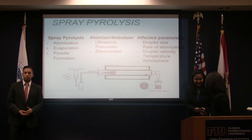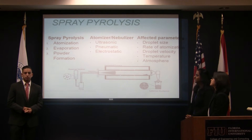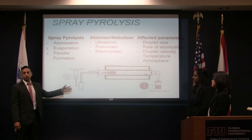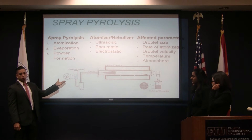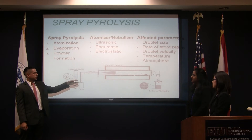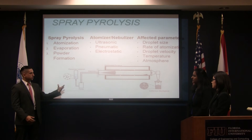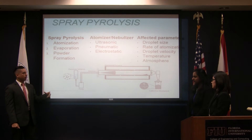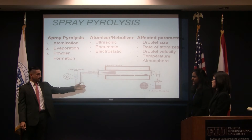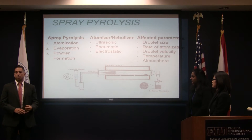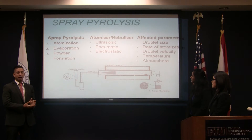So what is spray pyrolysis? Basically, it's a three-step process. It begins with a precursor solution that you'll see right here. The solution is atomized by a nebulizer and atomizer, and the droplets formed are carried into the furnace, where it goes through evaporation. Once the constituent elements are left, a chemical reaction occurs, and then a powder is formed, and the powder is then collected at the end of the collection mechanism. The effective parameters for spray pyrolysis can be the droplet size, velocity, the rate of atomization, the temperature, and the atmosphere.